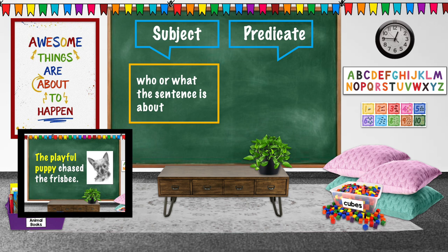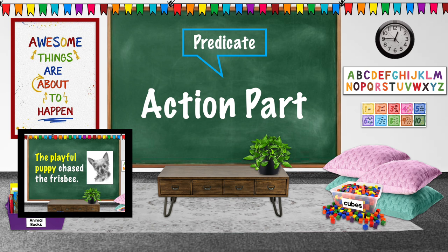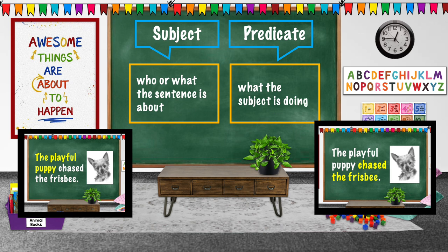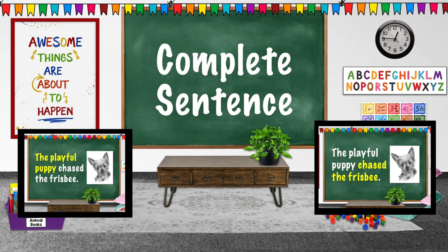The subject tells us who or what the sentence is about. The predicate is the action part of the sentence. It tells us what the subject of the sentence is doing. For a sentence to be complete, it must have both a subject and a predicate.